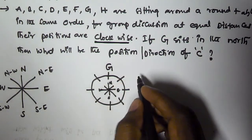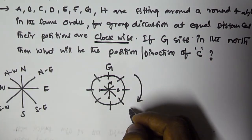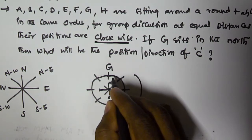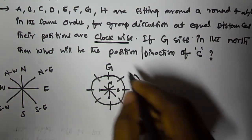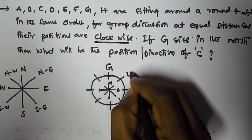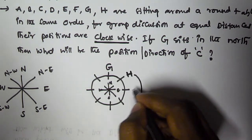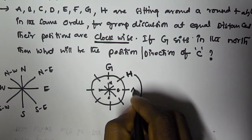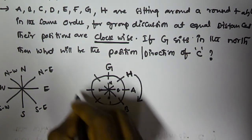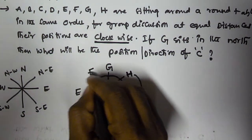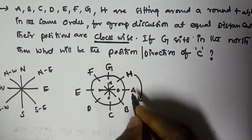Clockwise means in this direction — the clock hands move in this direction. So after G we have H, moving in the clockwise direction. After that we have A, B, C, D, E, and F. So A started here, they are sitting in the clockwise direction: A, B, C, D, E, F, G, H.